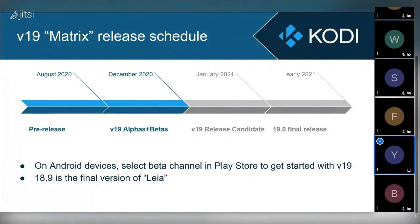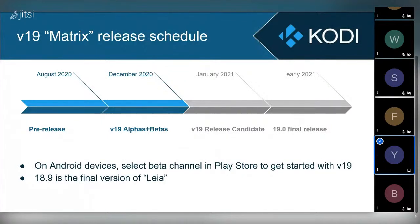V19 development started in 2019 with the release of version 18 'Leia', and it's been longer than usual. We were in pre-release development up until August this year, then started doing three alpha and two beta releases which finished up this month. In early January we will release the first release candidate of Kodi v19, and if everything is well we will have the final release in early 2021.